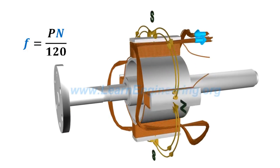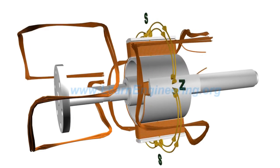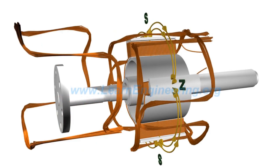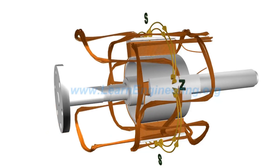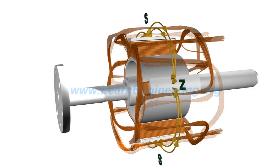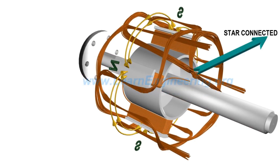For producing three-phase AC current, two more armature coils — which are in 120-degree phase difference with the first — are placed in the stator winding. Generally, one end of these three coils are star connected, and three-phase electricity is drawn from the other ends.